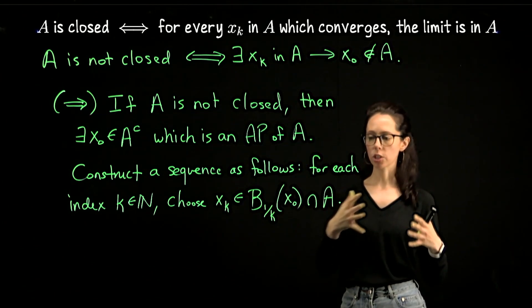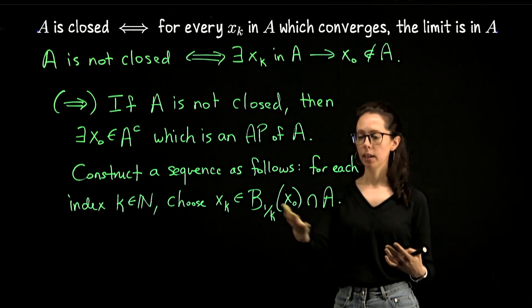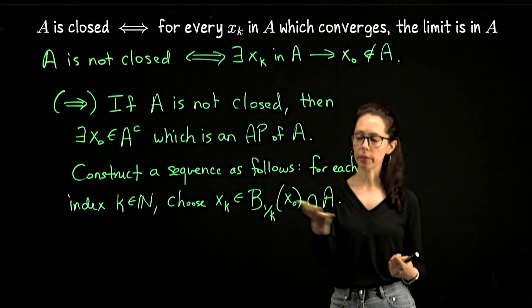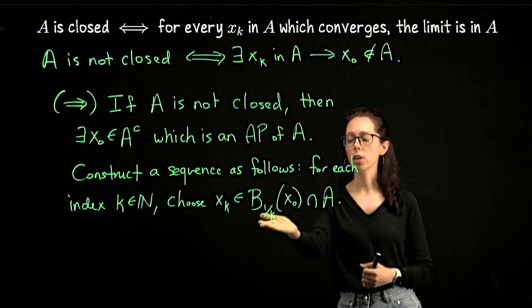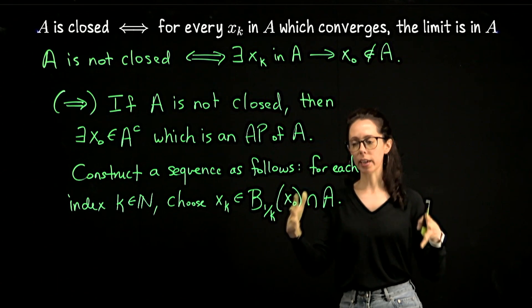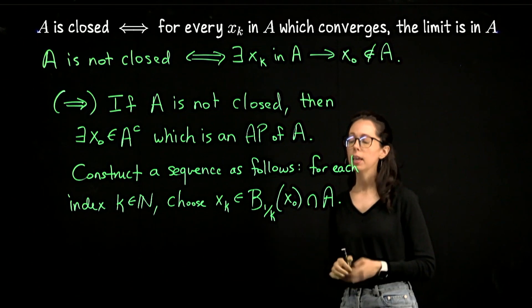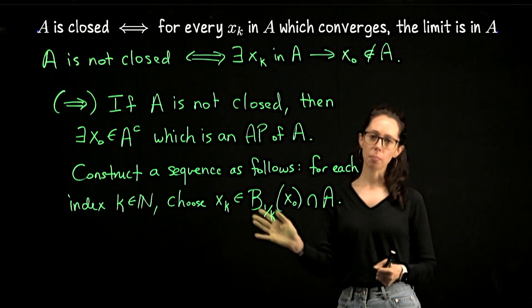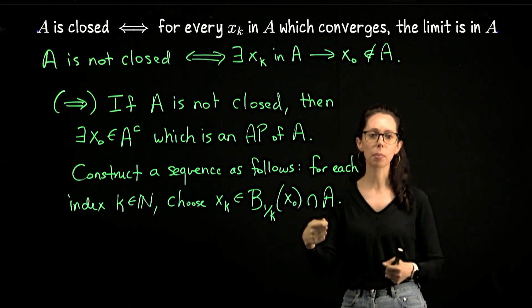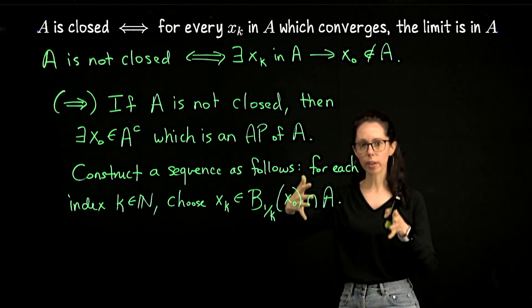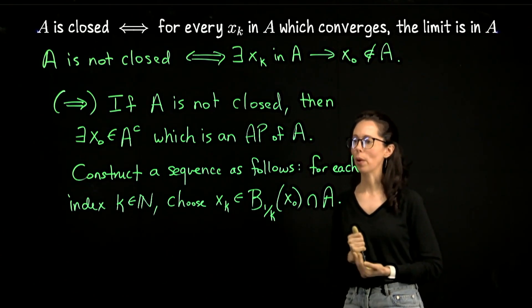Because it's an accumulation point of A, it always has non-empty intersection with A whenever I design any kind of open neighborhood around it. So here I'm saying create open neighborhoods whose radii are shrinking in a prescriptive way like one over k where k is the index in the sequence. Your sequence terms here might not be unique and that's okay. Sequences don't have to only have unique elements in them. But as this radius shrinks, eventually you're actually going to have to pass to a different term. You can't choose the same term forever.